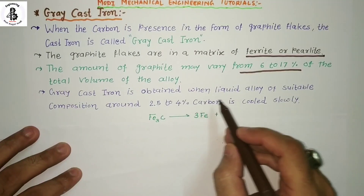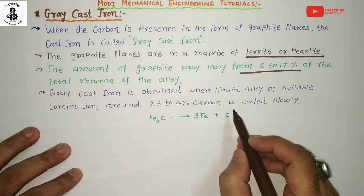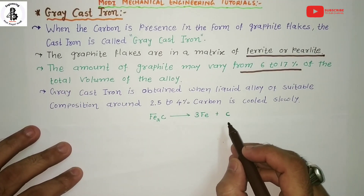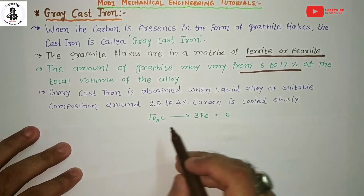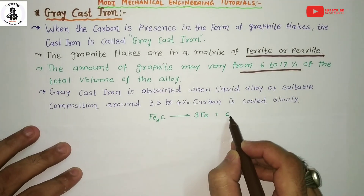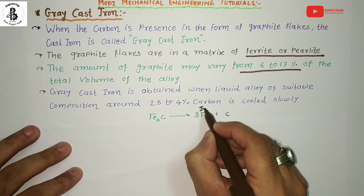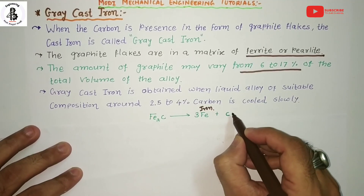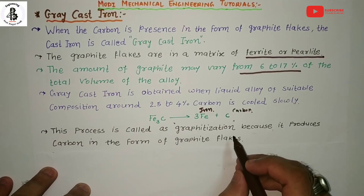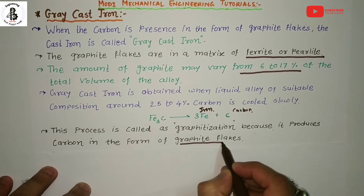Gray cast iron is obtained when a liquid alloy of suitable composition — around 2.5 to 4 percentage carbon — is cooled slowly. During slow cooling, cementite decomposes into iron and carbon according to the equation: Fe₃C → 3Fe + C, meaning it decomposes into three irons and one carbon.